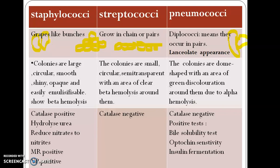I will show you the images. Pneumococci are deployed as diplococci — they are broad and narrow with a lanceolate appearance. To summarize: staphylococci are in grape-like bunches, streptococci are in chains or pairs, and pneumococci show a lanceolate appearance. I hope the morphology section is clear.